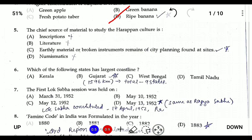Question five: the chief source of material to study the Harappan culture. The Harappan civilization didn't have literature, inscriptions, or coins, but they had early material remains — broken instruments and remains of town planning found in excavations. Question six: which state has the largest coastline? The answer is Gujarat, with a total coastline length of 1,596 kilometers.